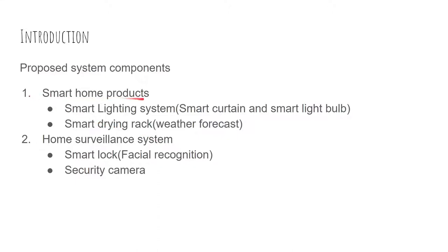For the Smart Home Products, there will be a Smart Lighting System. In the Smart Lighting System, there is a Smart Curtain and Smart Light Box, and these will work concurrently with each other to provide the user with the best result.